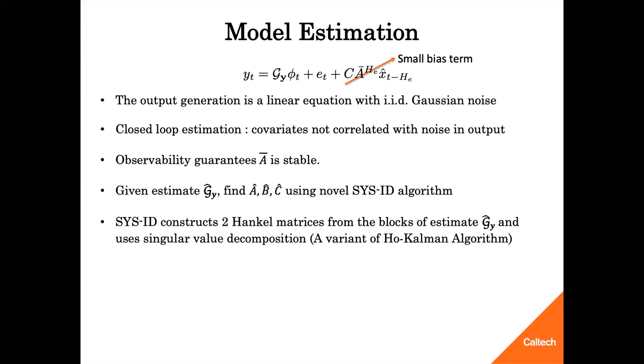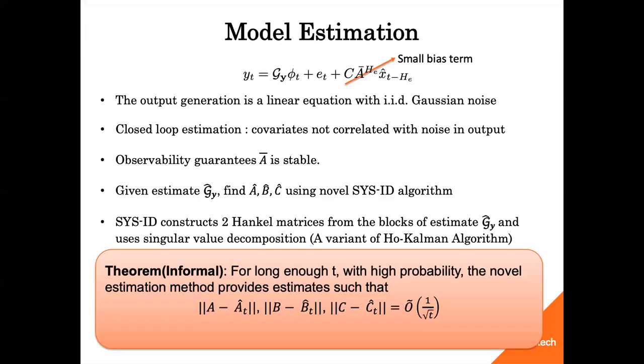Given an estimate G_Y hat, we then estimate the model parameters A, B, C using a novel algorithm called SISID. You can find the details of the algorithm in the paper on arXiv. SISID is a variant of a well-known Ho-Kalman algorithm, and it briefly constructs two Hankel matrices from the blocks of estimate G_Y hat, and uses singular value decomposition to come up with A hat, B hat, and C hat.